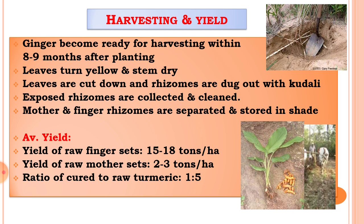The average yield of raw finger sets and the average yield of raw mother sets — raw means before processing — is around 2 to 3 tons per hectare. The main rhizome attached to the other rhizomes is called the mother set, and the finger sets are used for processing purpose.